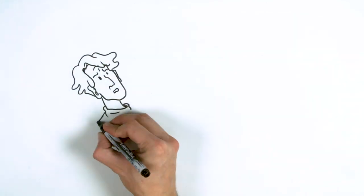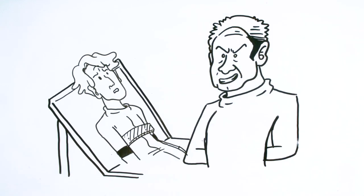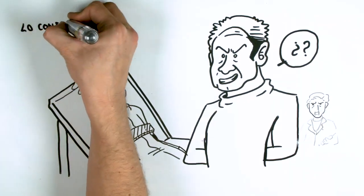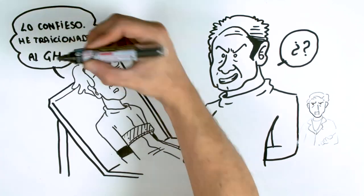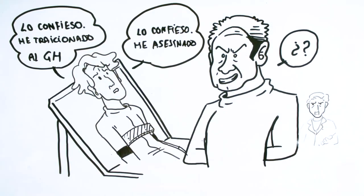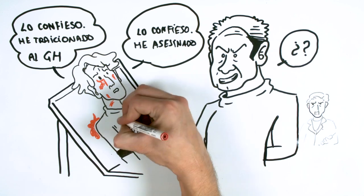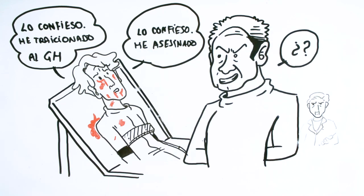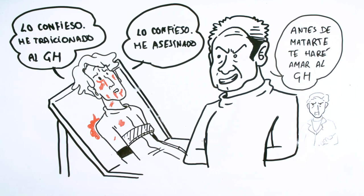When he woke up, O'Brien was at his side along with a man in a white coat and syringe. Then they started questioning him. He confessed all the crimes of which he was accused, even though he had not committed them. The tortures were unspeakable. O'Brien was part of the party. He had lied to him and now wanted to erase his thoughts and then kill him.